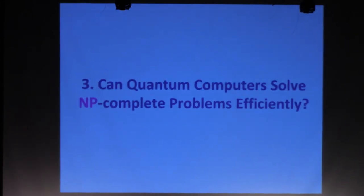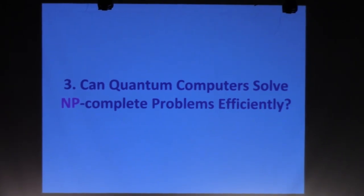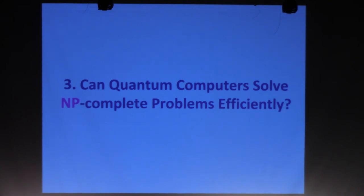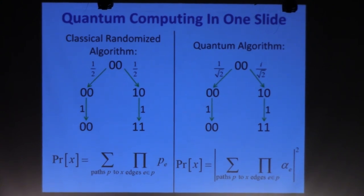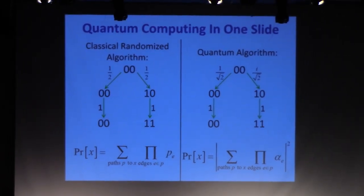Now let's move on to quantum computers — do they change the picture? In order to tell you about this, I need a slide to explain what a quantum computer is. The advantage for this audience is you've been seeing not only quantum mechanics but even quantum field theory. Quantum mechanics is actually not nearly as hard as you may have been led to believe, especially once you take the physics out of it. In quantum information, the way we tend to think about quantum mechanics is as a certain generalization of the rules of probability. We typically only care about finite-dimensional Hilbert spaces and not infinite-dimensional ones.